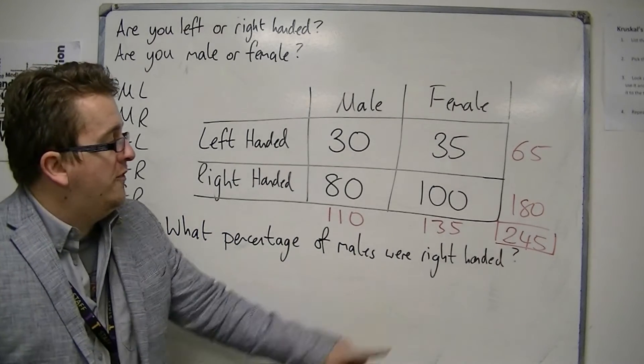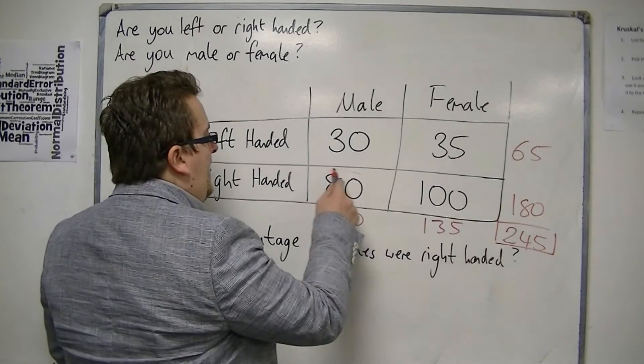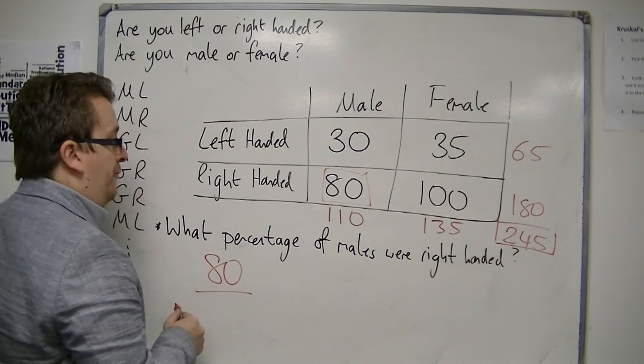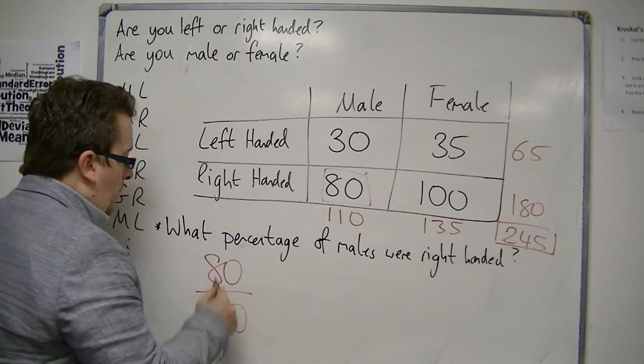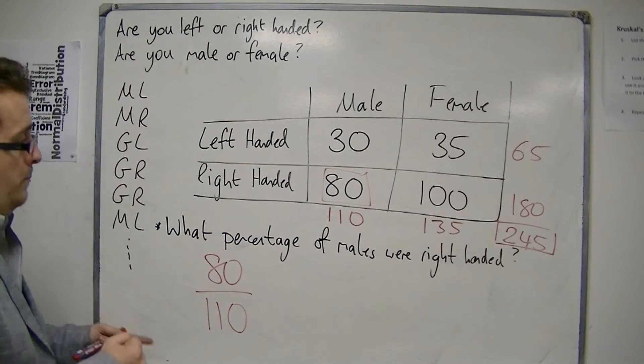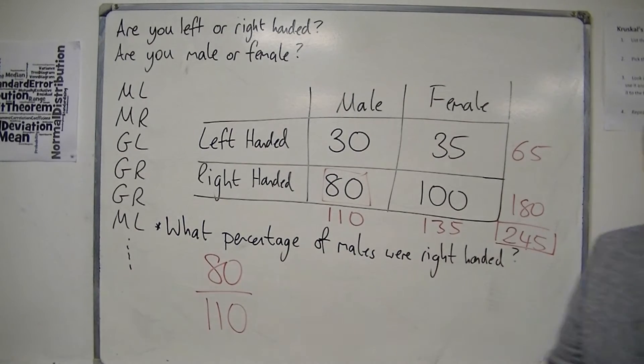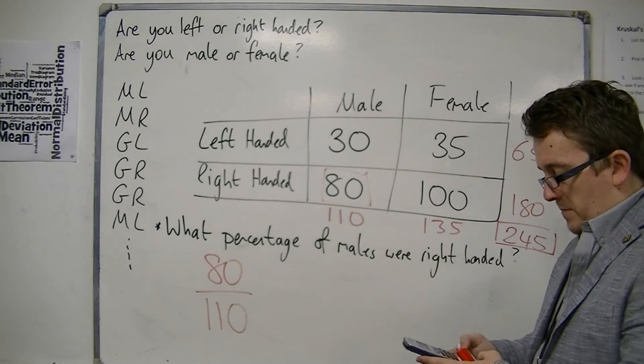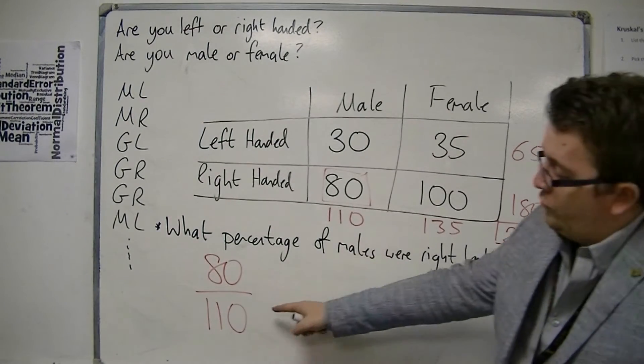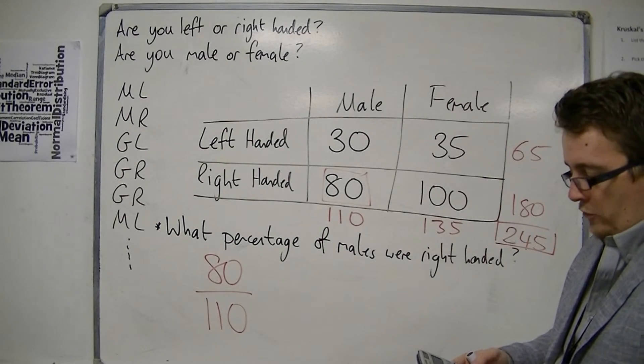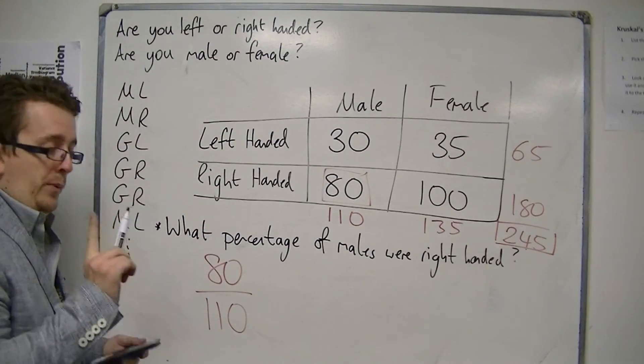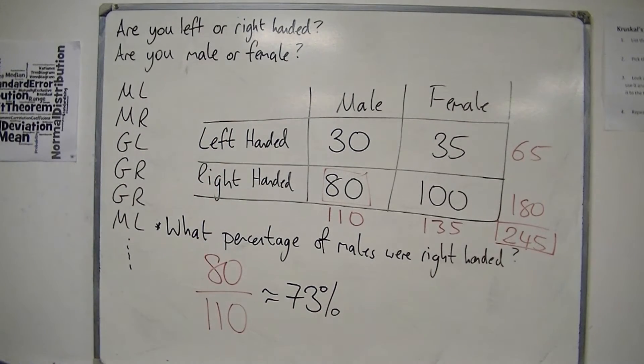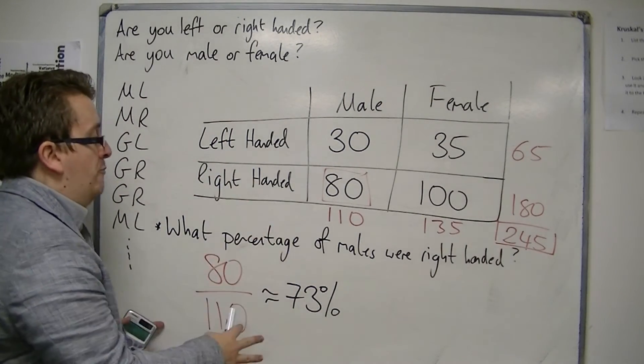So what percentage of males were right handed? Well, there were 80 right handed males out of 110. So 80 of the 110 males were right handed. And so what we need to do is convert this fraction into a percentage. So remember, you do top divided by the bottom. So 80 divided by 110 and then multiply your answer by 100. And so what we get to the nearest percentage is 73%. So 73% of males are right handed.